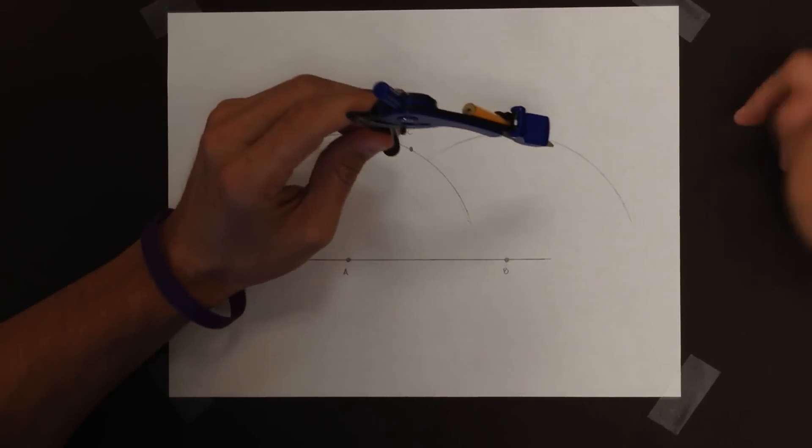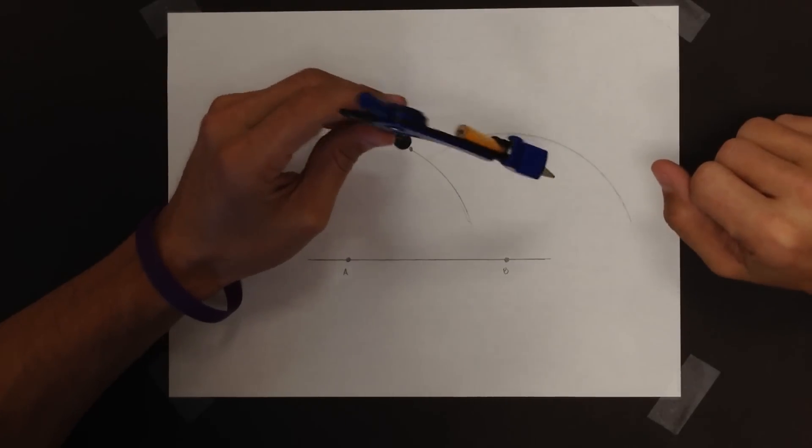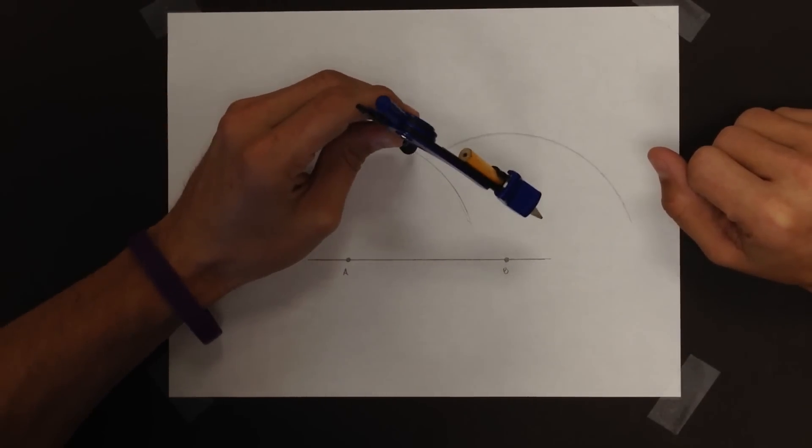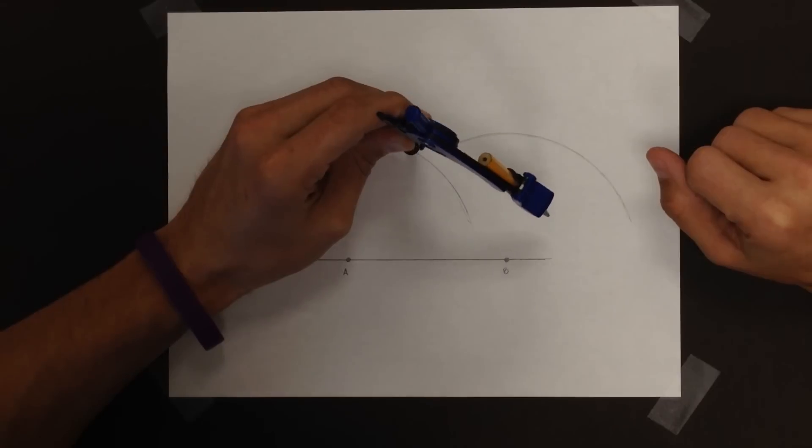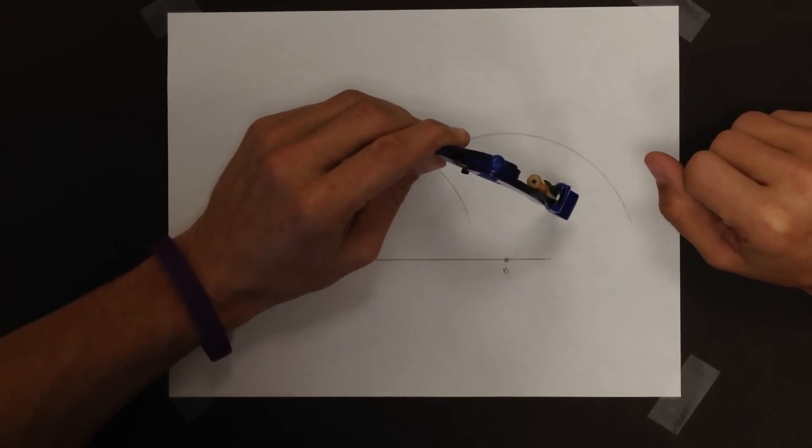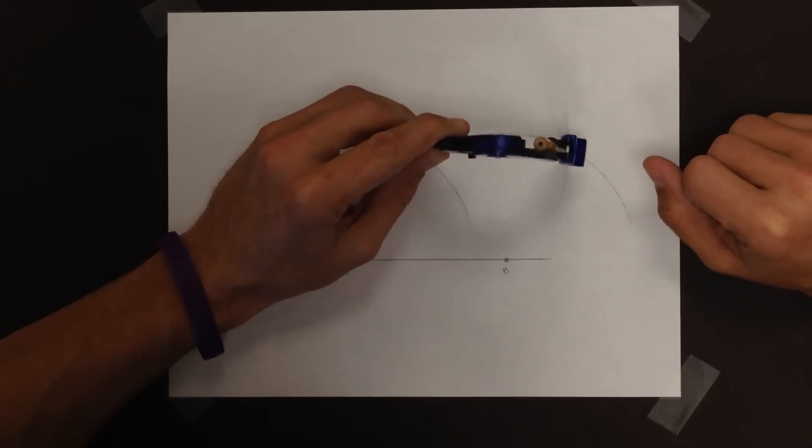So all I have to do to find out how to draw that line is I'll put the non-pointy end on C. And I'll draw a line, or an arc actually, that will intersect what ended up being the second arc I drew.